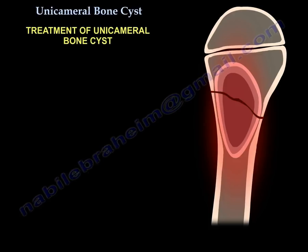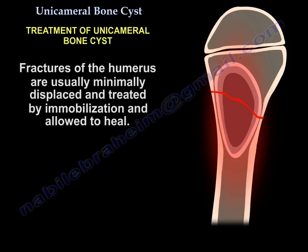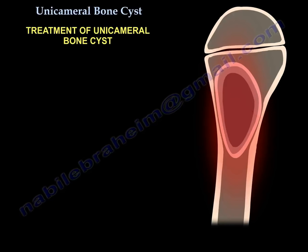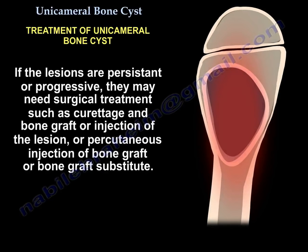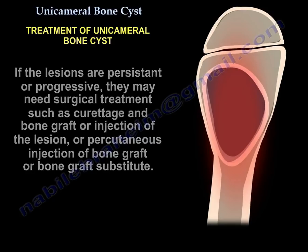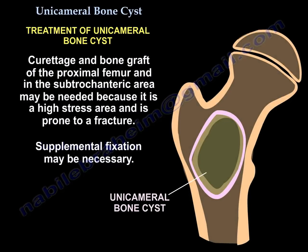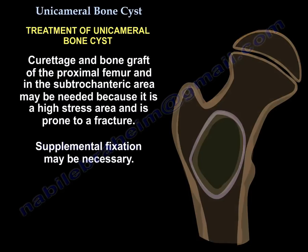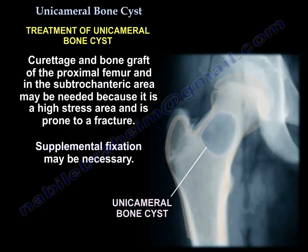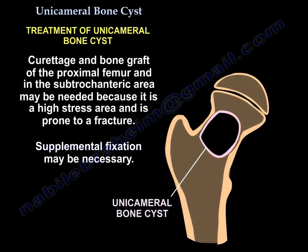Treatment of unicameral bone cysts: fractures of the humerus are usually minimally displaced and are treated by immobilization and allowed to heal. If lesions are persistent or progressive, they may need surgical treatment such as curettage and bone graft, injection of the lesion, or percutaneous injection of bone graft or bone graft substitute. Curettage and bone graft of the proximal femur may be needed because it is a high-stress area and is prone to fracture.